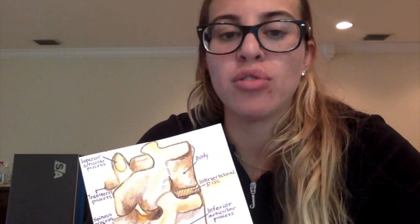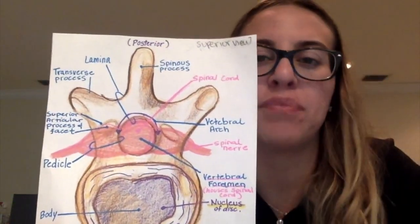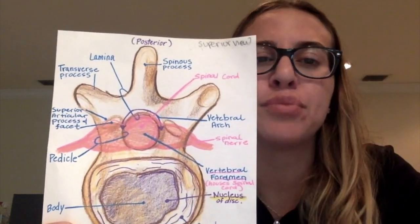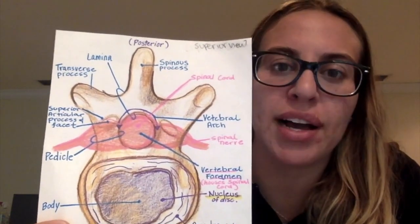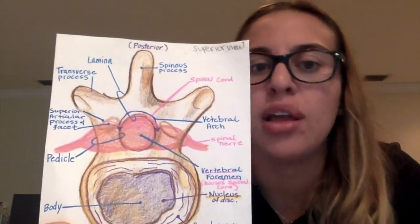The annulus fibrosis is a tough outer layer attached to the bodies of the adjacent vertebrae. The intervertebral disc is flexible, allowing movement of the spinal column. This movement will fluctuate the size of the corresponding intervertebral foramen.